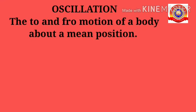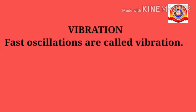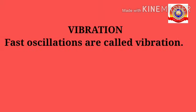The next one we discussed is oscillation — the to and fro motion of a body about a mean position is called oscillation. For example, the motion of a swing. The next one is vibration — fast oscillations are called vibration. Tapping on a stretched rubber band using a finger, we can feel vibration.